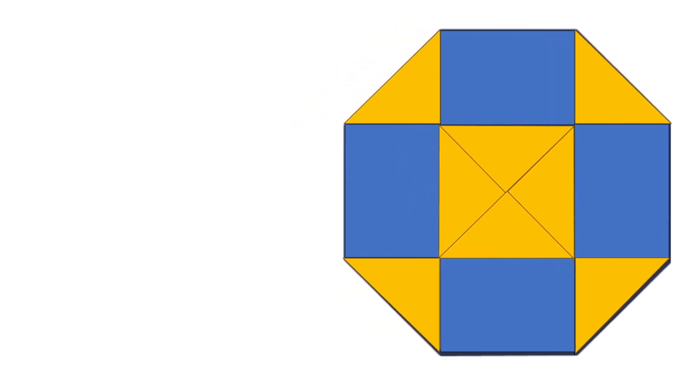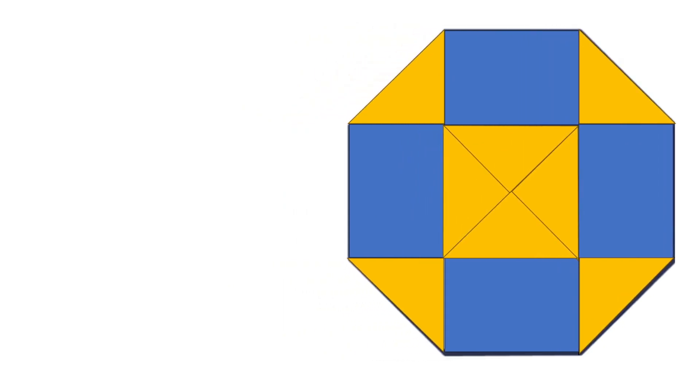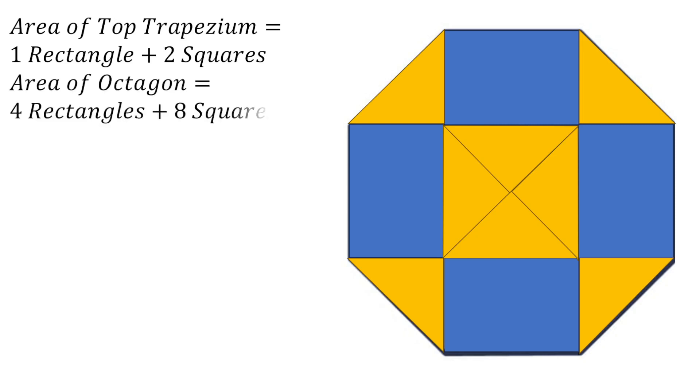So when we look at the entire octagon and the top part which is a trapezium, what can we say about those? Well the area of the top trapezium is made out of one rectangle and two squares. The area of the entire octagon is made out of four rectangles and eight squares.